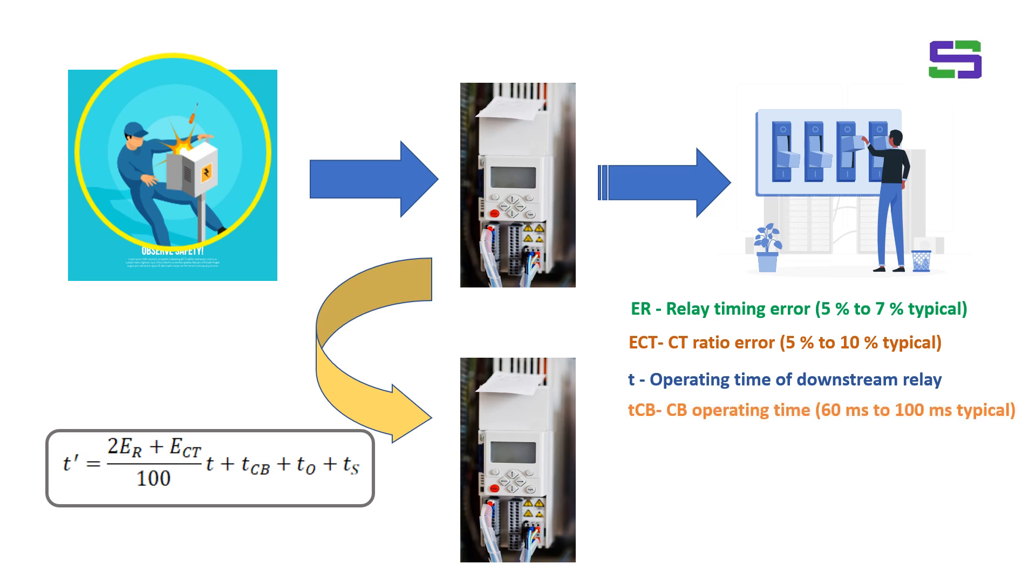TCB is the circuit breaker operating time, typically this is 60 millisecond to 100 millisecond. It depends on the manufacturer, different manufacturers. So you need to check the manufacturer's circuit breaker catalogue. You need to check what is the operating time. In case of medium voltage or high voltage, this operating time may be different. For low voltage circuit breakers, that operating time may be different.